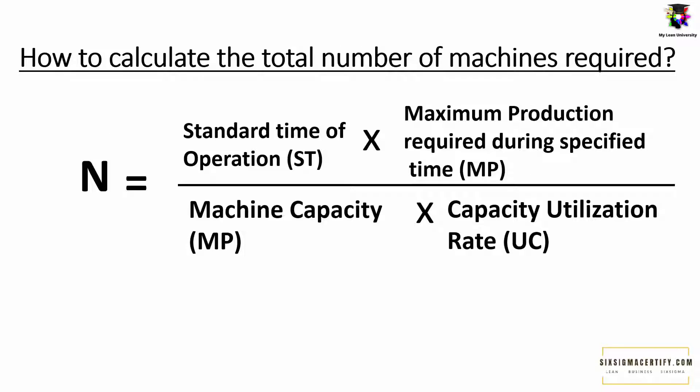The simple formula to find or calculate the total number of machines required is N, which stands for total number of machines required, equals standard time of operation times maximum production required during specified time divided by machine capacity times the capacity utilization rate.